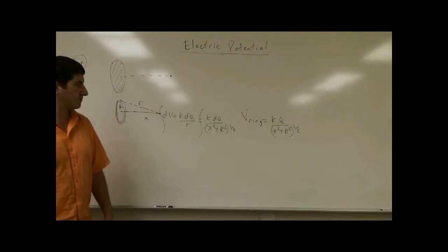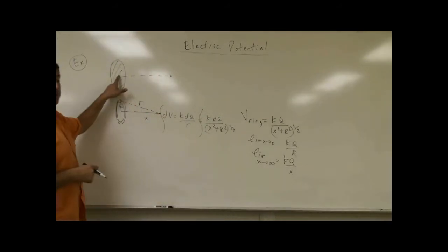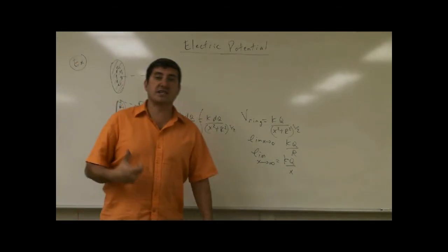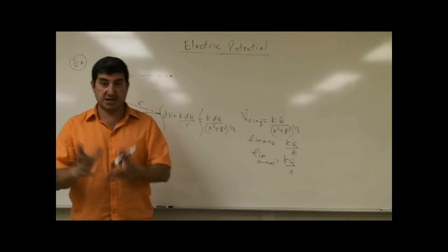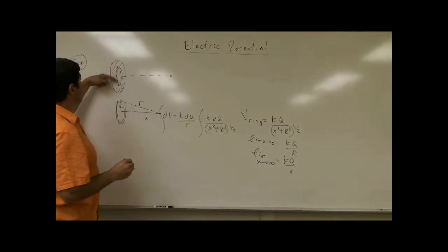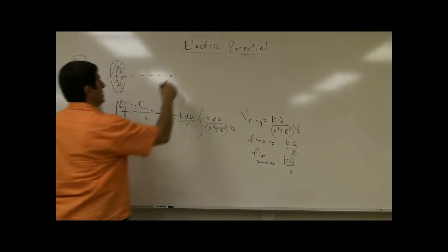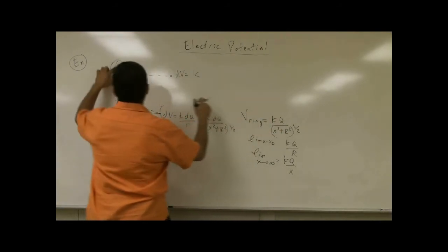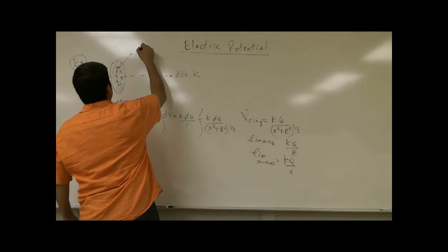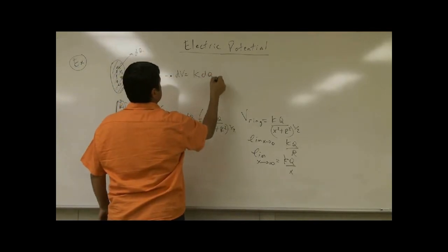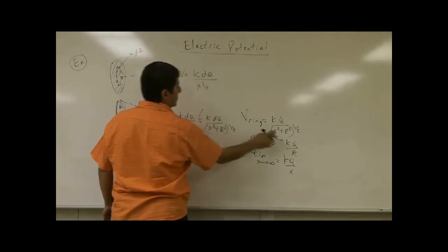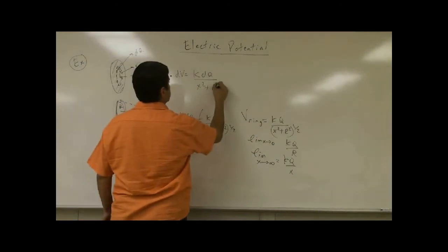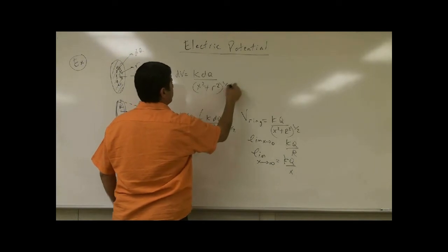So pretty straightforward. Now let's take that and find the electric potential of a disc. I'll do very similar to what I did with the electric field of a disc. I'll assume that the disc is made up of a bunch of rings, and then dV is equal to k, where each ring has a charge dq, and the radius of the ring I'll call little r, over x squared plus r squared to the one-half power.